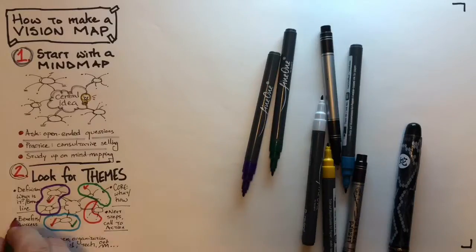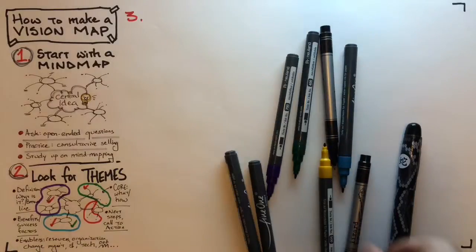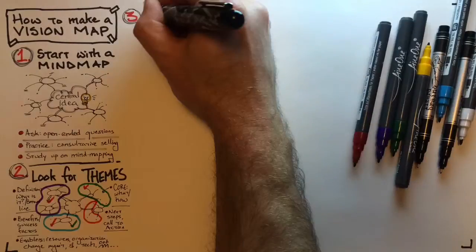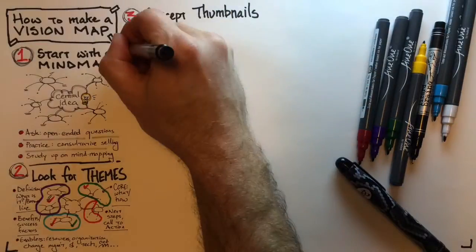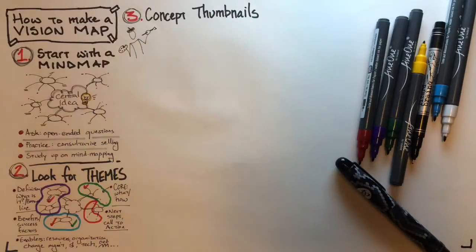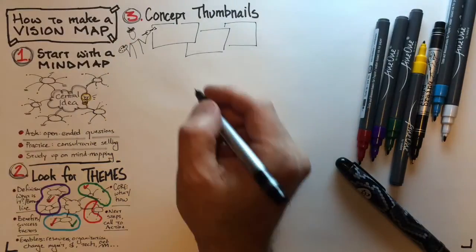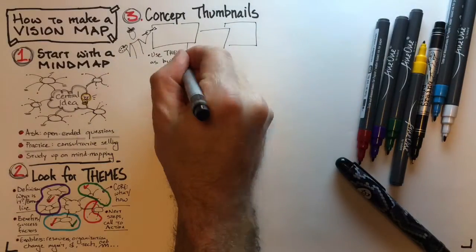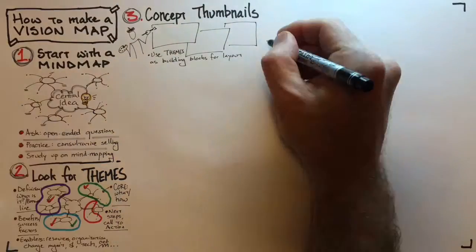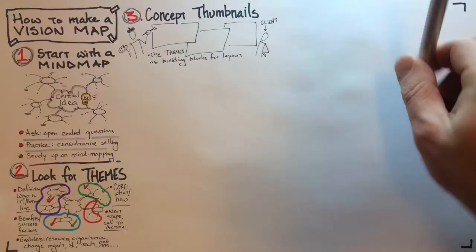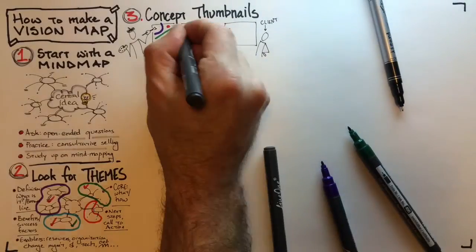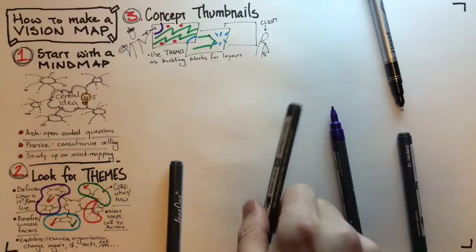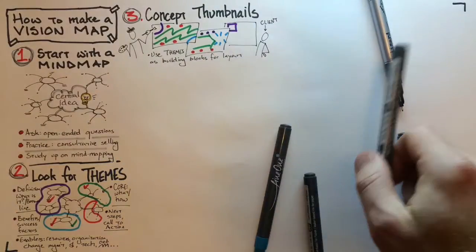Once you have the themes, use those as the building blocks for layout. This is where you get to flex your creative self a little bit. You can find some examples of layouts in the Grove's Strategic Visioning Cards and on their website under Story Maps.